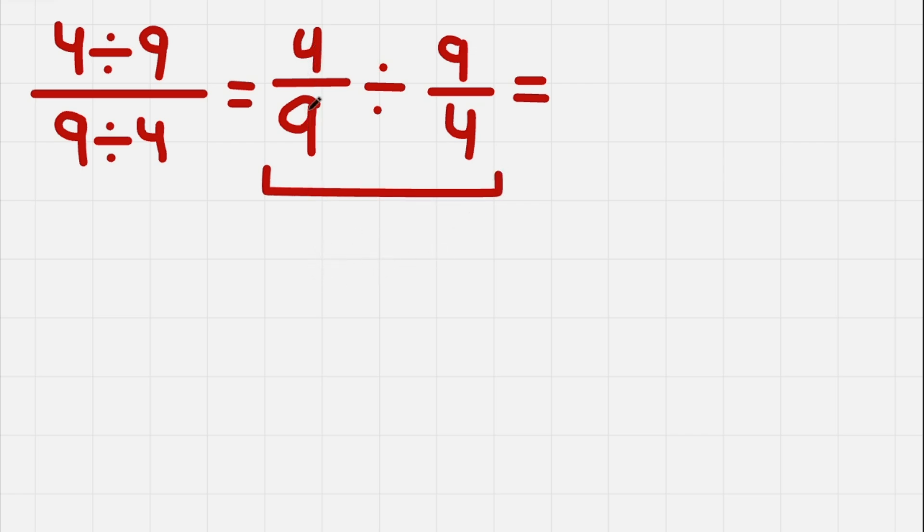So we had 4 divided by 9 divided by 9 divided by 4. Now we get 4 divided by 9, without changes, times—and now we flip this fraction. So we get 4 divided by 9.